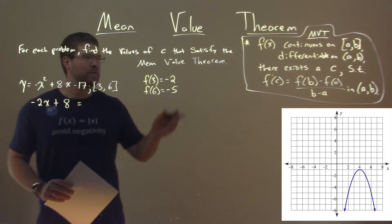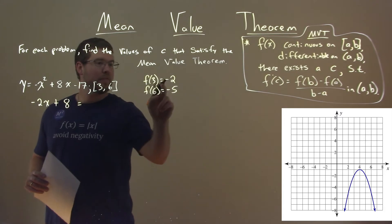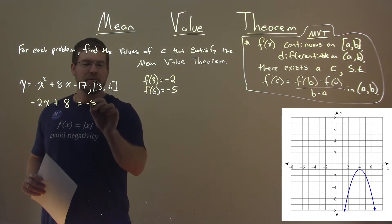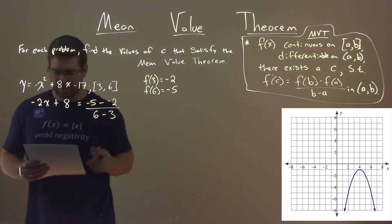We set that equal to, using our formula here, f of b is negative 5 minus negative 2 over b minus a, 6 minus 3, okay?